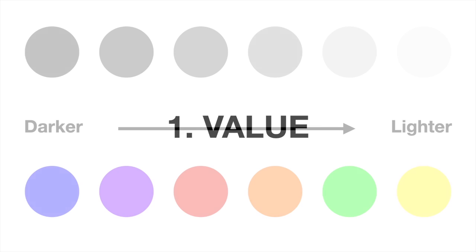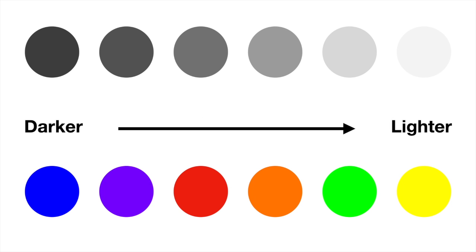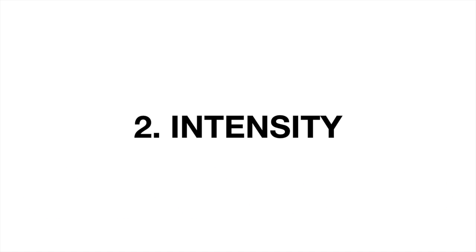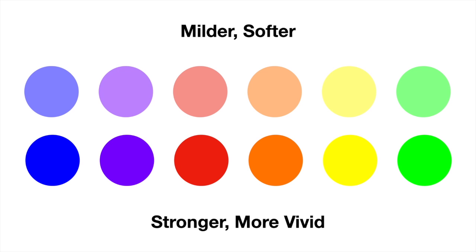Value: some colors are inherently darker than others. Blue, for instance, is darker than yellow. Intensity: color can be strong or mild, like a red stop sign versus a red brick.